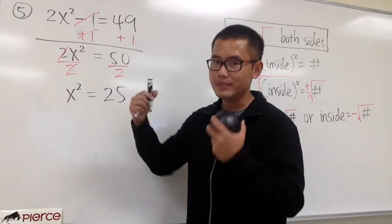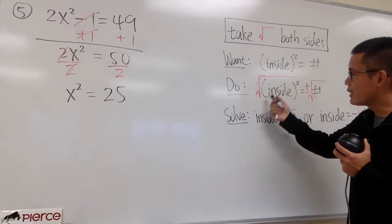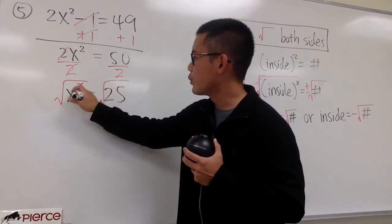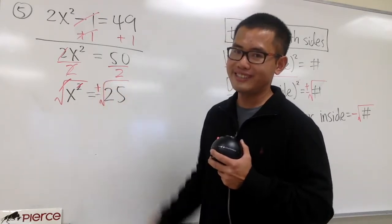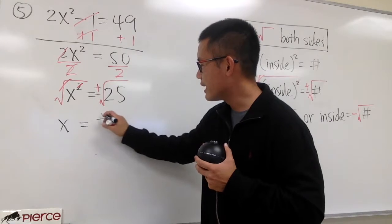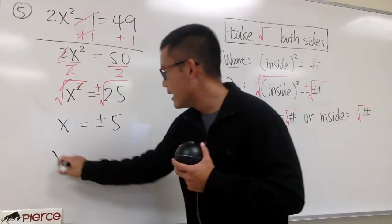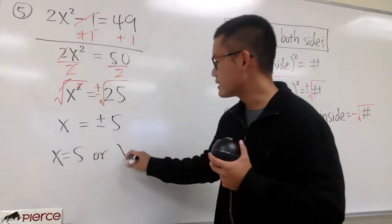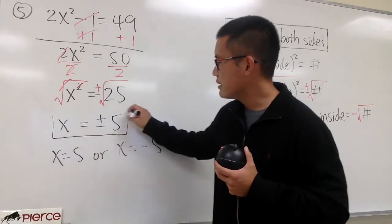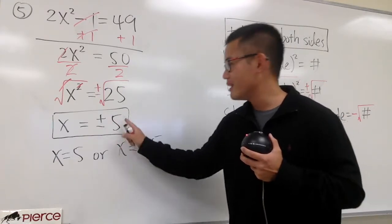You see, this is x to the second power, and it's equal to a number. So we can just go ahead and take the square root on both sides — take the square root right here and right here. The square and square root cancel, and be sure you put a plus-minus on the right-hand side. The left-hand side will just have x by itself. This is equal to plus-minus, and when we take the square root of 25, we will get 5. This means x equals positive 5, or x equals negative 5.